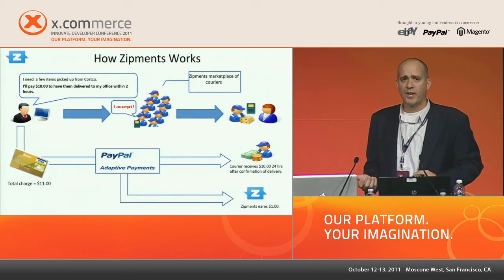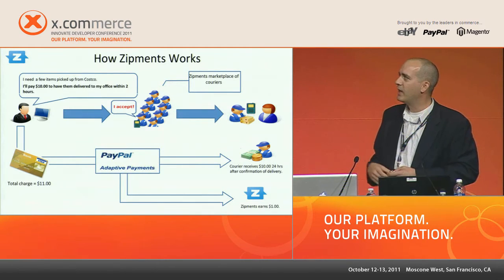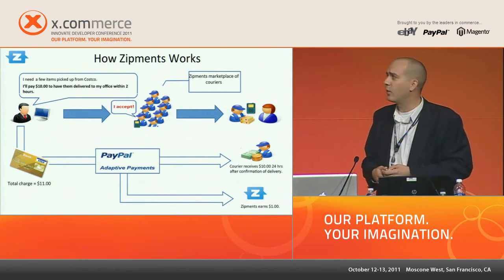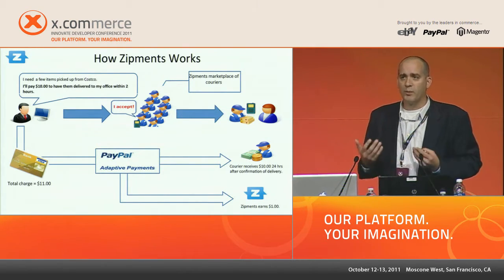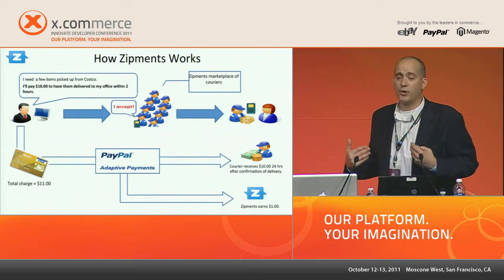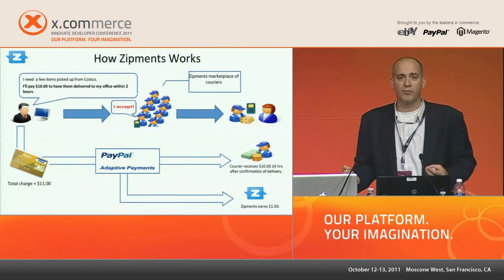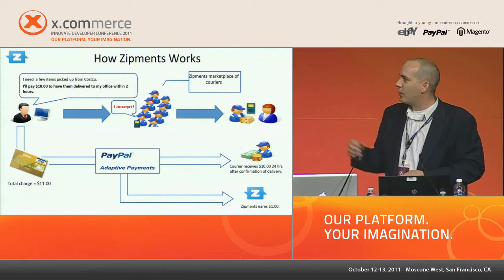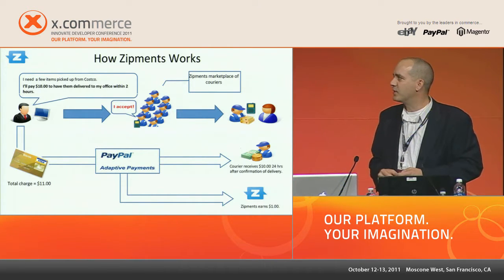We're a transaction-based model — we get a little bit on each transaction, so we need a lot of transactions. Essentially, if someone wants to buy something from a retailer — whether a big-box retailer or a local mom-and-pop store — they shoot out an assignment to the Zipments Marketplace. Through a competitive bidding process, they're guaranteed a very low cost for items they need delivered. My deliveries don't always go to home or the office — sometimes on a Saturday afternoon they go to the soccer field. Using Adaptive Payments has been very helpful for doing those chain and split transactions.